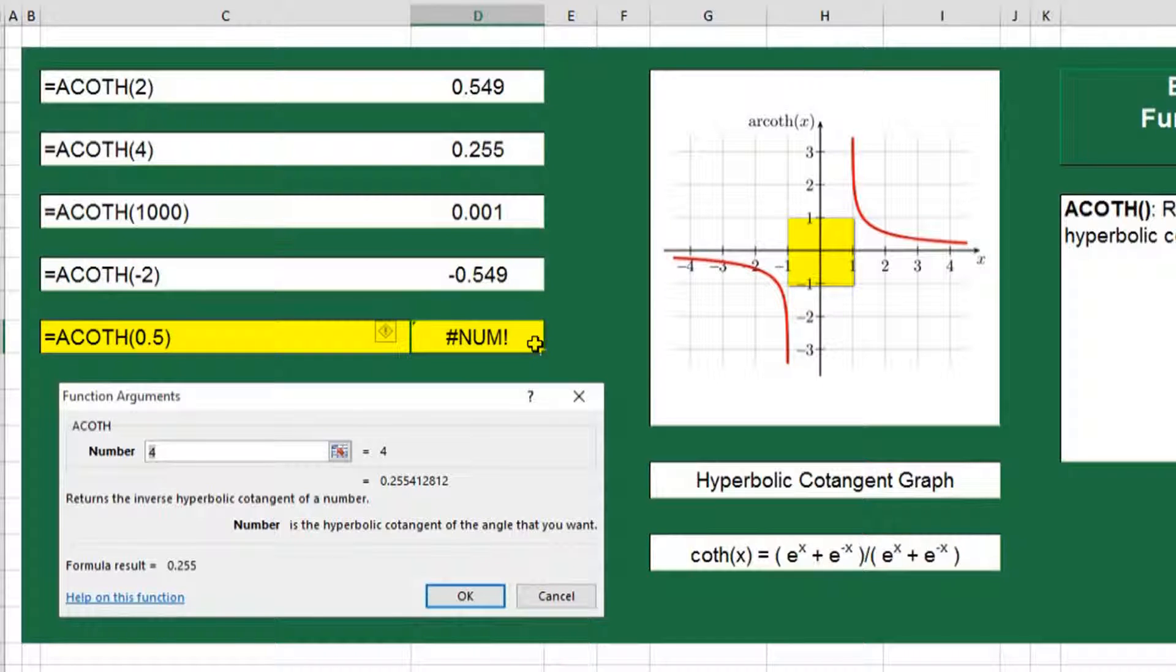You'll also notice that a hyperbolic cotangent graph never intersects the x coordinates between minus 1 and 1. And if we tried any of these values it would produce a number error like in this example of 0.5.